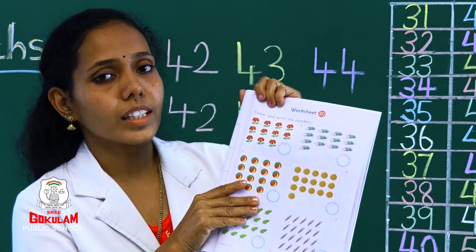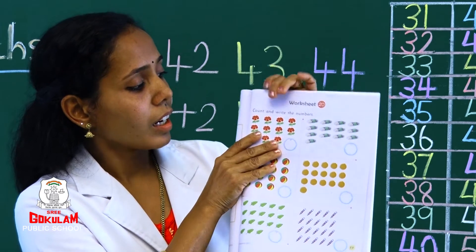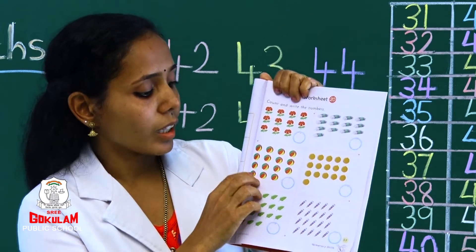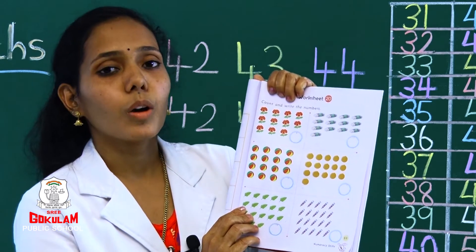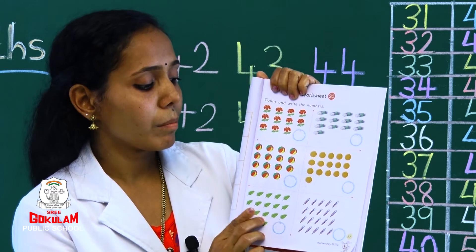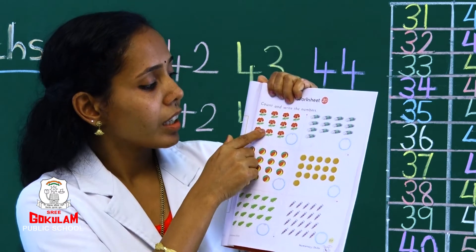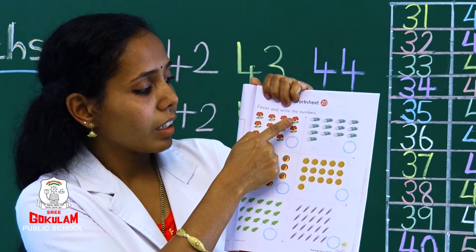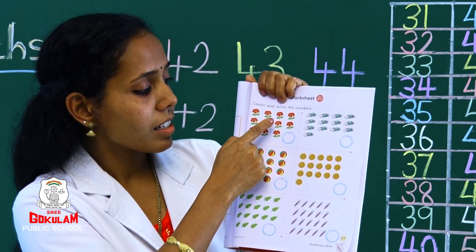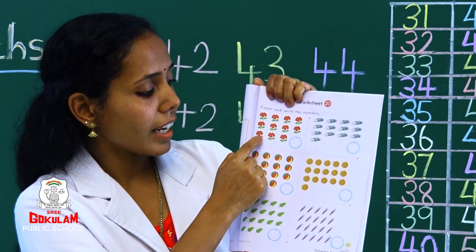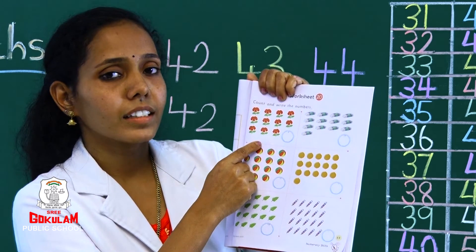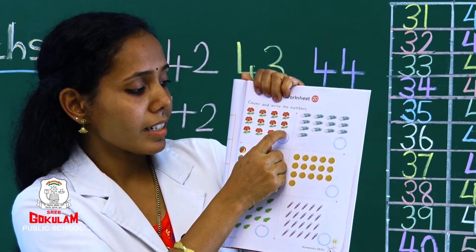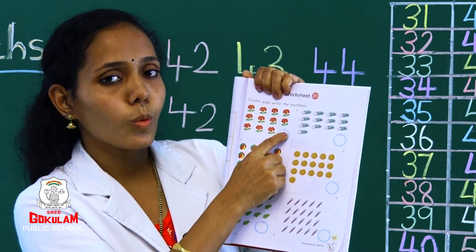Next, Worksheet 20: Count and write the numbers. The picture has objects — we need to count and write in the box. See the first picture: flowers are 1, 2, 3, 4, 5, 6, 7, 8, 9, 10, 11 — total 11 flowers. Write number 11.